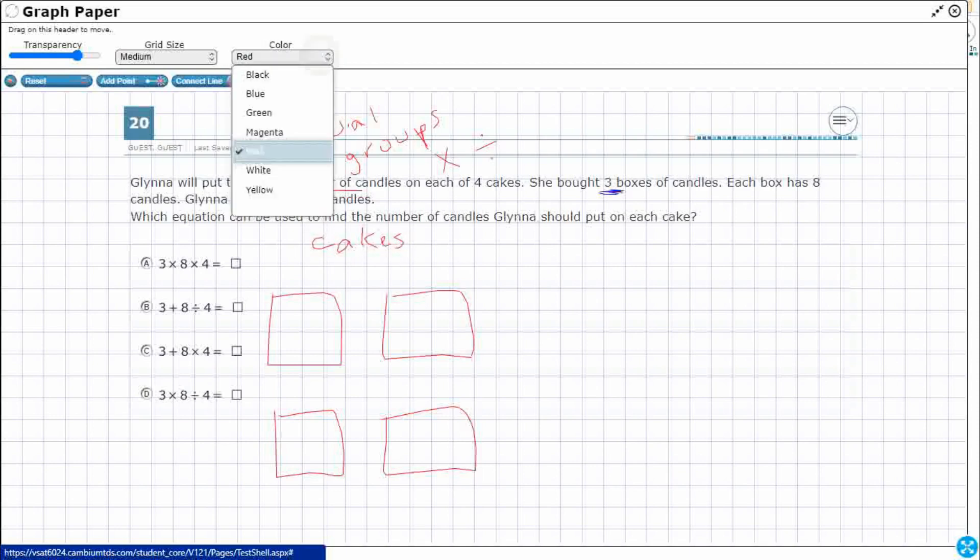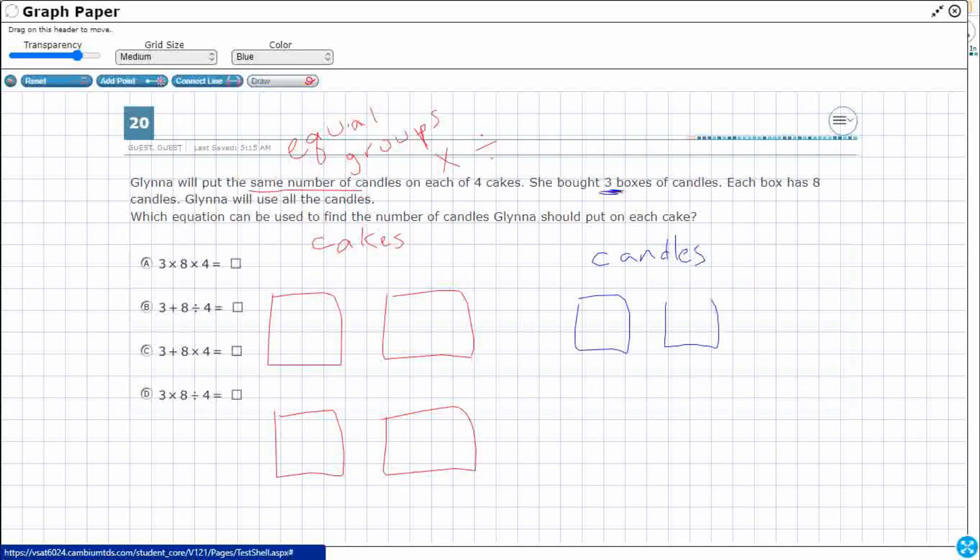And then let's get my candles. Three boxes. I'll just do this. Here's a box. There's a box. There's a box.